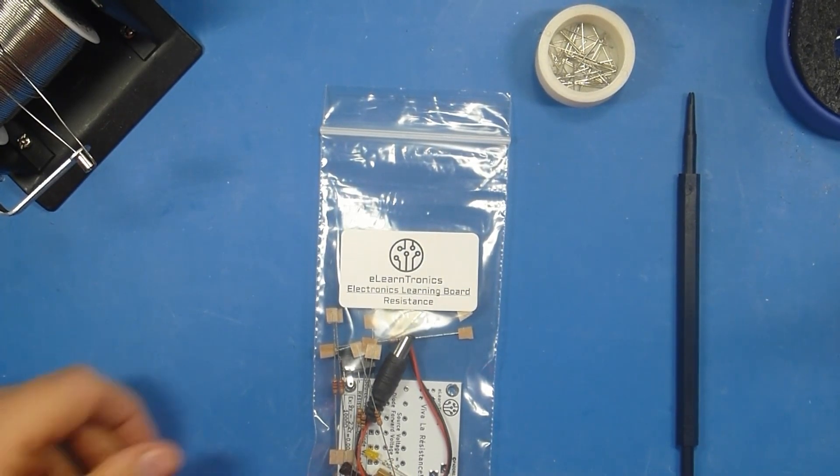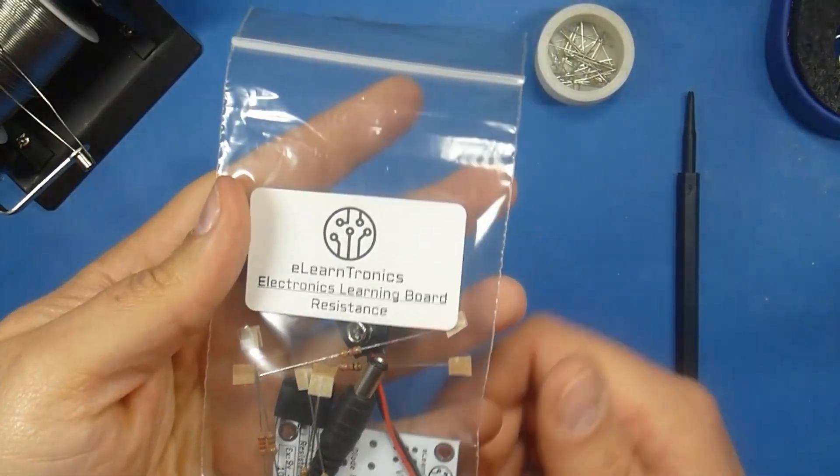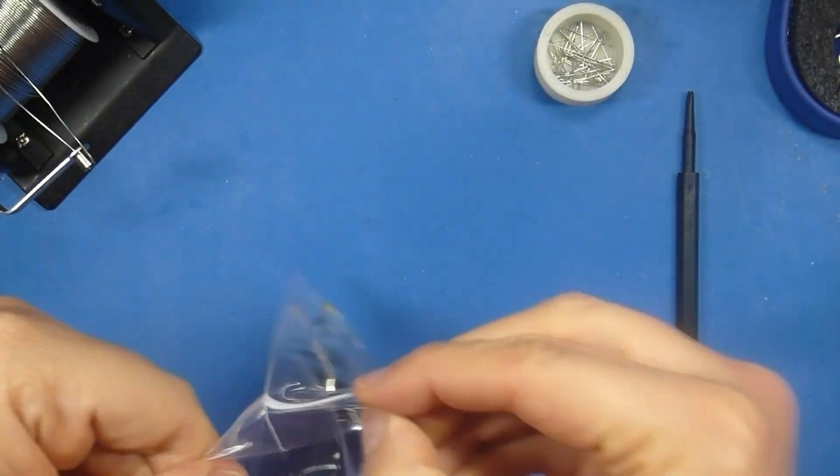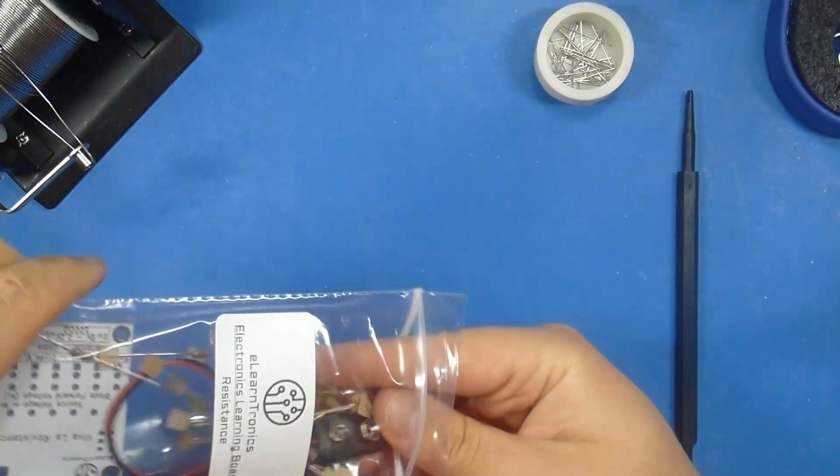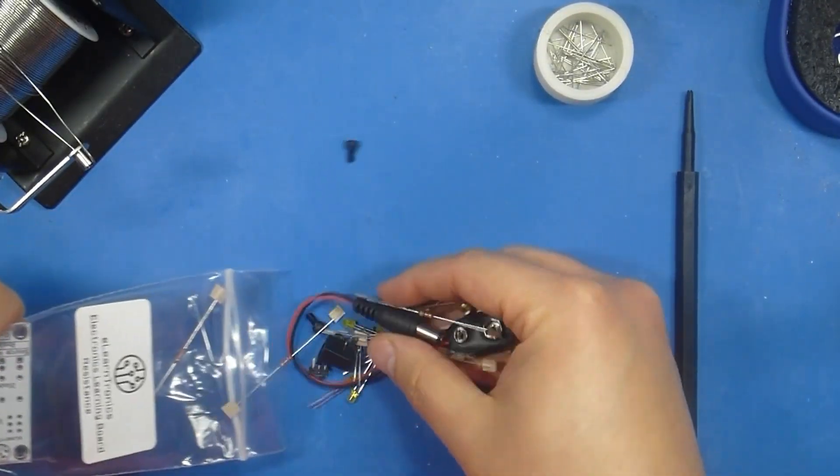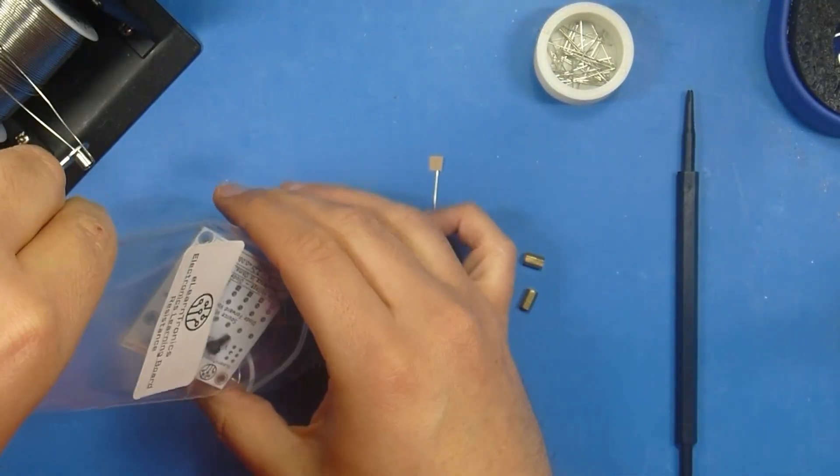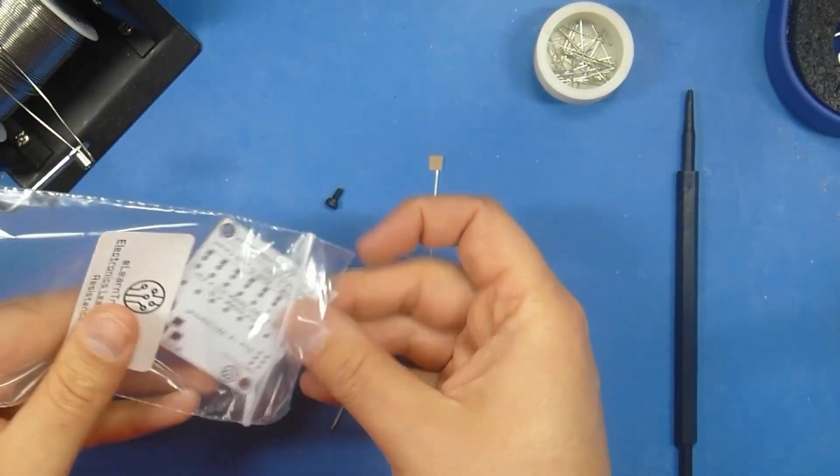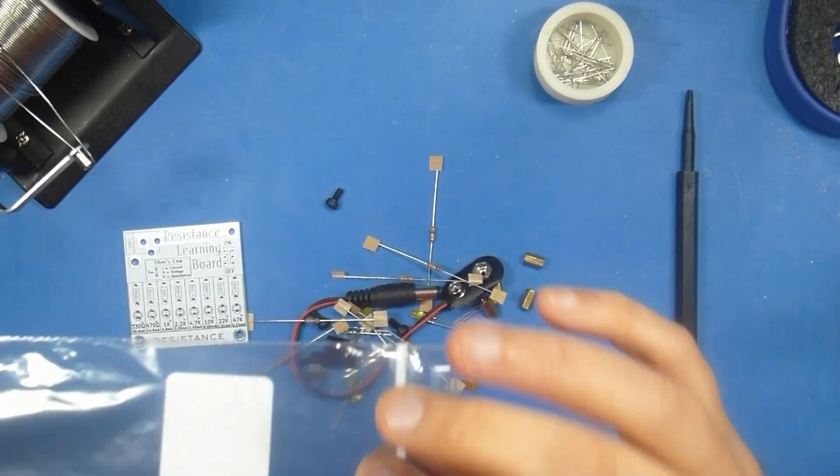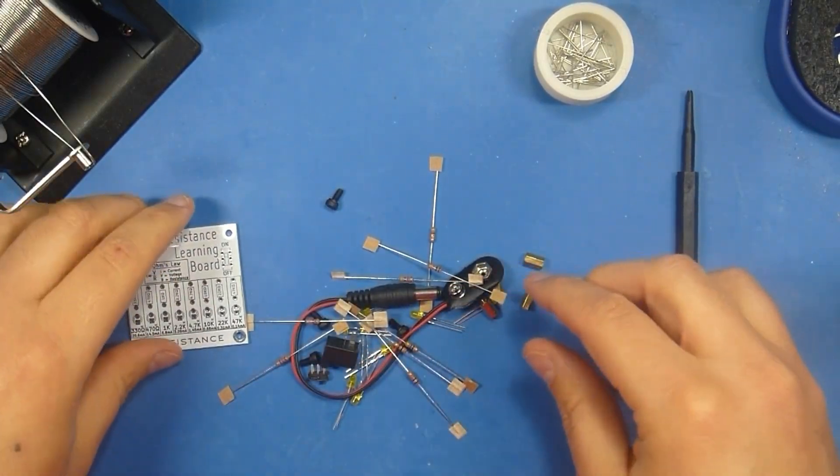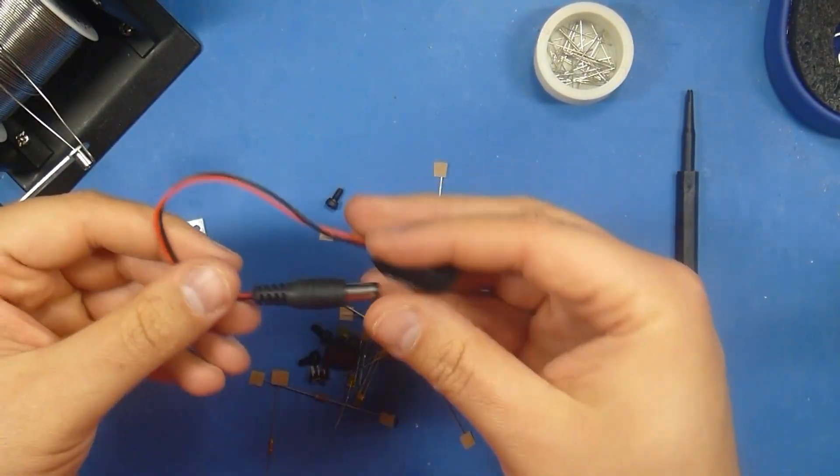Welcome to the soldering tutorial for your Resistance eLearntronics Electronics Learning Board. Go ahead and take your package, open it up, and we're just going to dump out the components. Make sure that you don't lose any of them. Now your packaging may look a little bit different from this bag. Let's go through and see what we have.